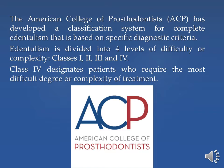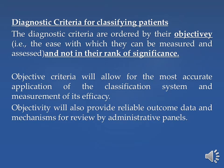Class 4 designates patients who require the most difficult degree of complexity of treatment. The diagnostic criteria are ordered by their objectivity — that is to say, the ease with which they can be measured and assessed, and not by their rank of significance. Objectivity criteria allow for the most accurate application of the classification system, measurement of its efficacy, reliable outcome data, and a mechanism for review by administrative panels.